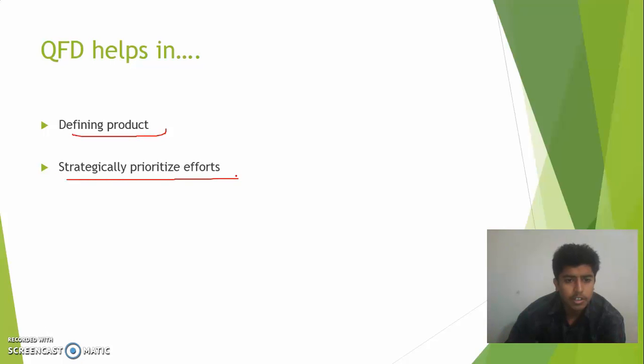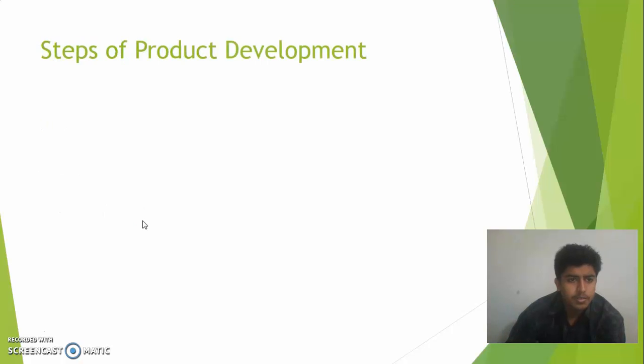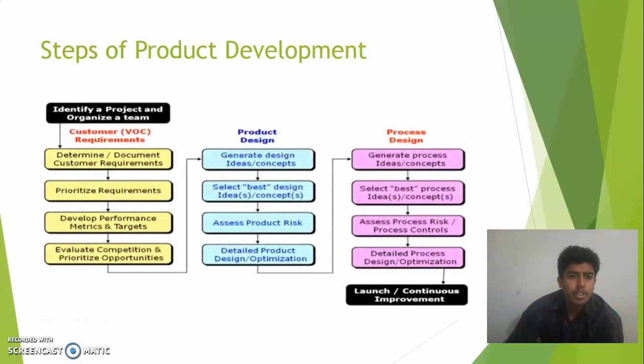Strategically prioritize efforts before the launch date and communication within the teams. Steps of product development: there are three major categories: customer requirements, product design, and process design. You can pause the video and see because it is going to be a really short video.